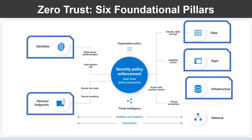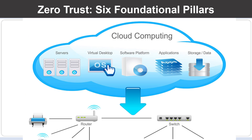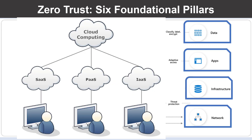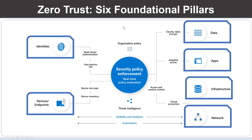Let us look into infrastructure. To improve security, you assess for version, configuration and just-in-time access, and use telemetry to detect attacks and anomalies. This allows you to automatically block or flag risky behavior and take proactive actions. The sixth foundational pillar for the Zero Trust model is network. Networks should be segmented, including deeper in-network microsegmentation. Also, real-time threat protection, end-to-end encryption, monitoring and analytics should be employed. These six foundational pillars work together with the Zero Trust model to enforce organizational security policies.